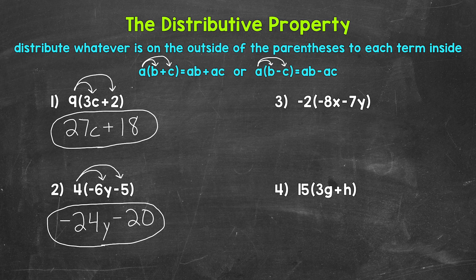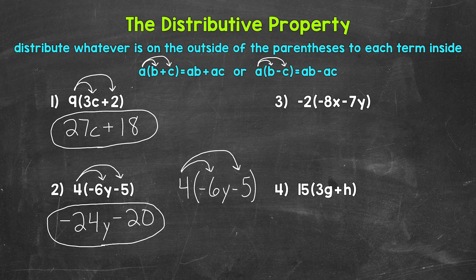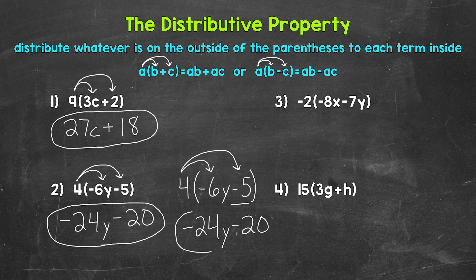I do want to mention another way to think through number 2, and this is an option when we have subtraction. So let me rewrite the expression here. We need to distribute the 4 — distribute to the negative 6y. And then when we distribute to the 5, we are going to look at this as negative 5, so we are including that subtraction sign, the sign in front of the 5, and look at this as negative 5. This gives us 4 times negative 6y is negative 24y, and then 4 times negative 5 is negative 20. So we get negative 24y minus 20 that way as well — the same thing either way, just slightly different as far as working through the distributive property.